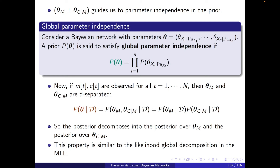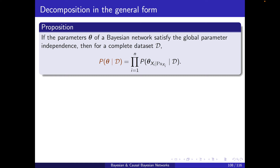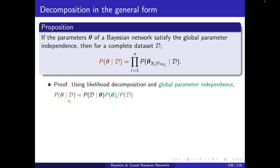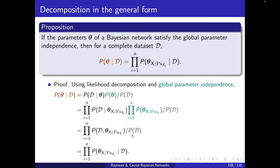This property is similar to the likelihood global decomposition in MLE. In general, if the parameters of a Bayesian network satisfy global parameter independence, then for a fully observed dataset the posterior decomposes in this form. The proof follows by writing the definition of the posterior, using likelihood decomposition, and applying global parameter independence — combining the two into a single probability by definition of conditional probability.